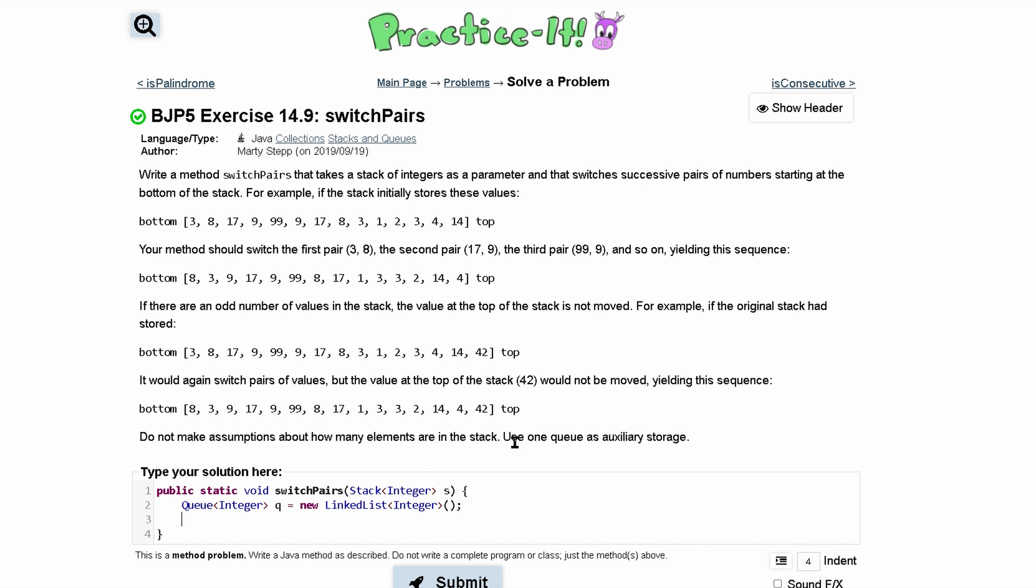We want to write a method named switch pairs. It's going to take a stack of integers as parameter, and it's going to switch successive pairs of numbers starting from the bottom of our stack going all the way to the top. If there's an odd number, though, that last one is not going to get switched.